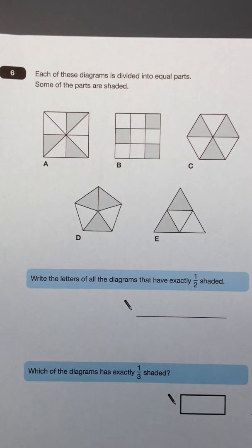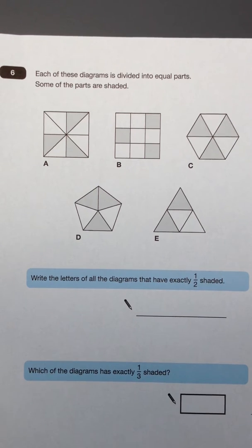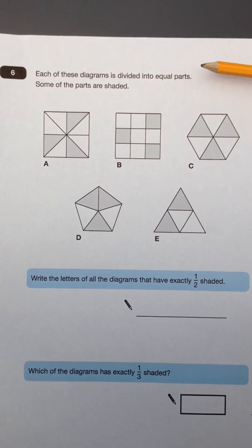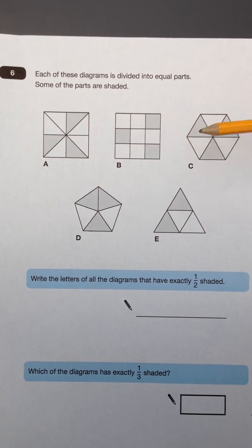This is question 6 from the 2014 Key Stage 2 Sats Paper A. Read the information carefully. It says each of these diagrams is divided into equal parts. Some of the parts are shaded, and you can see that in the diagram.